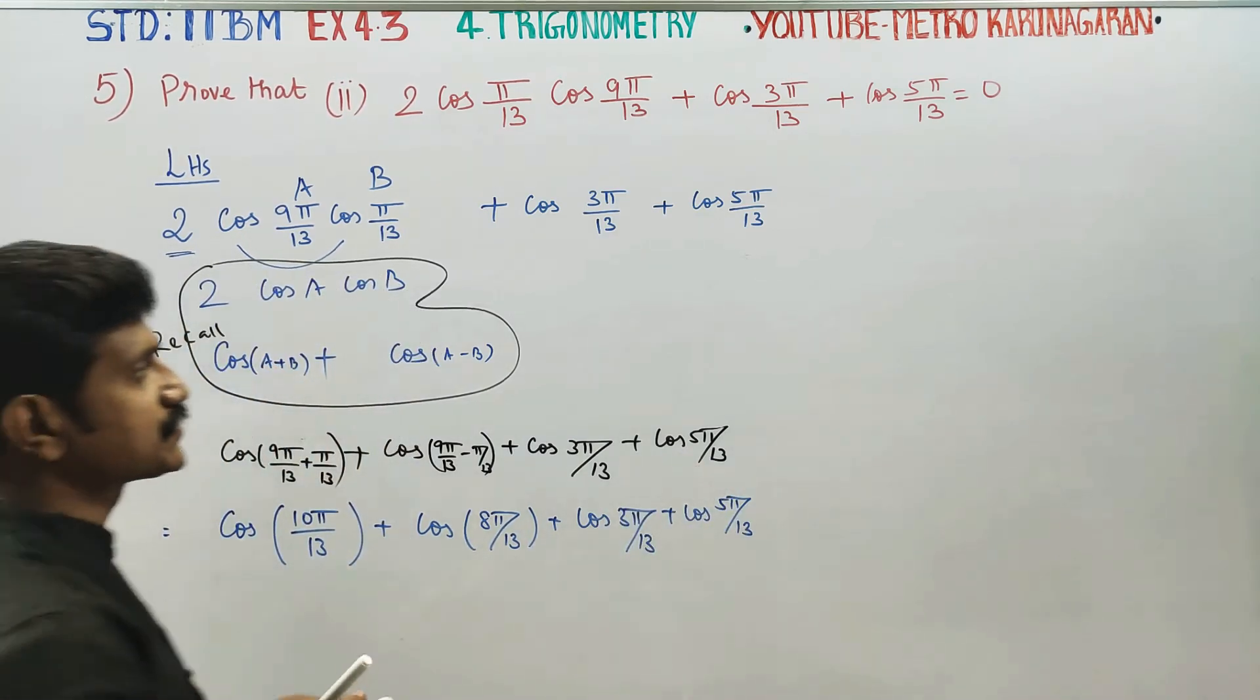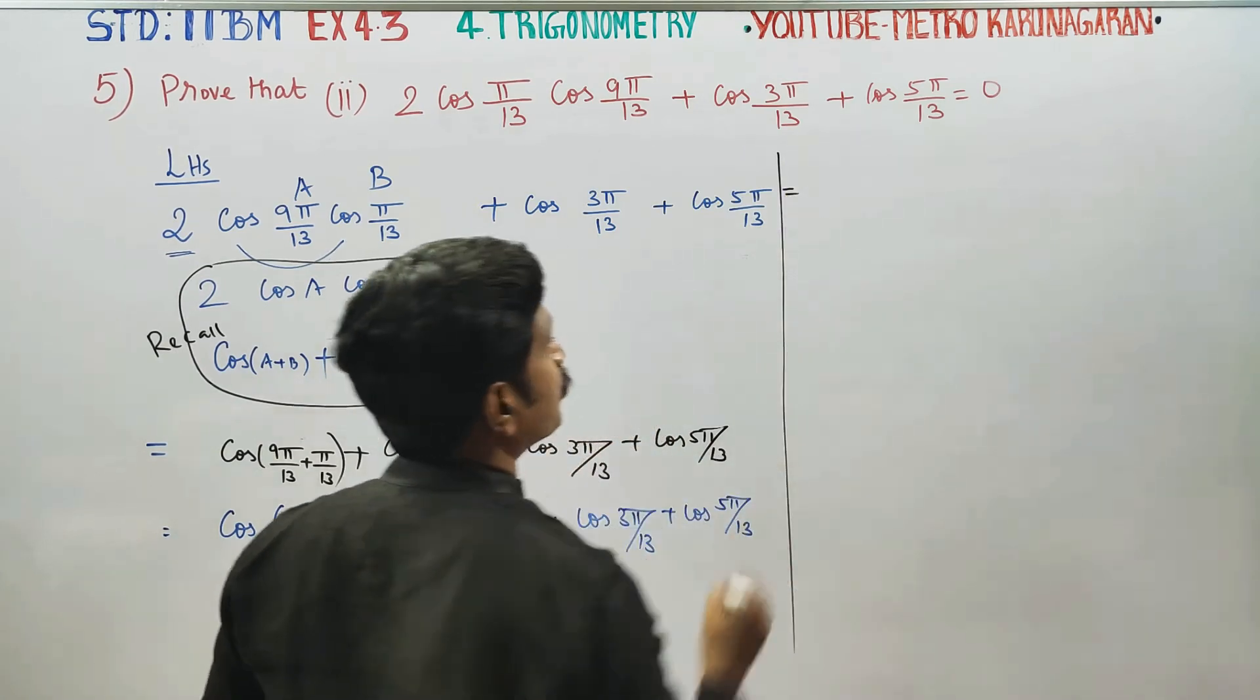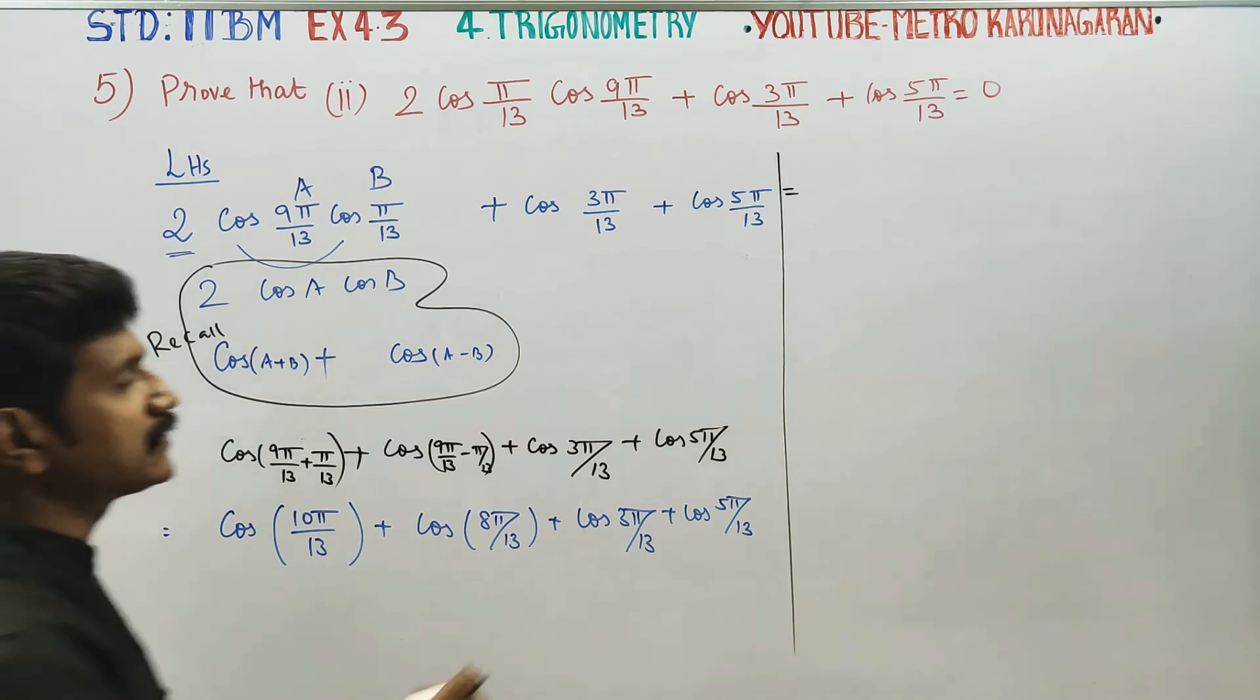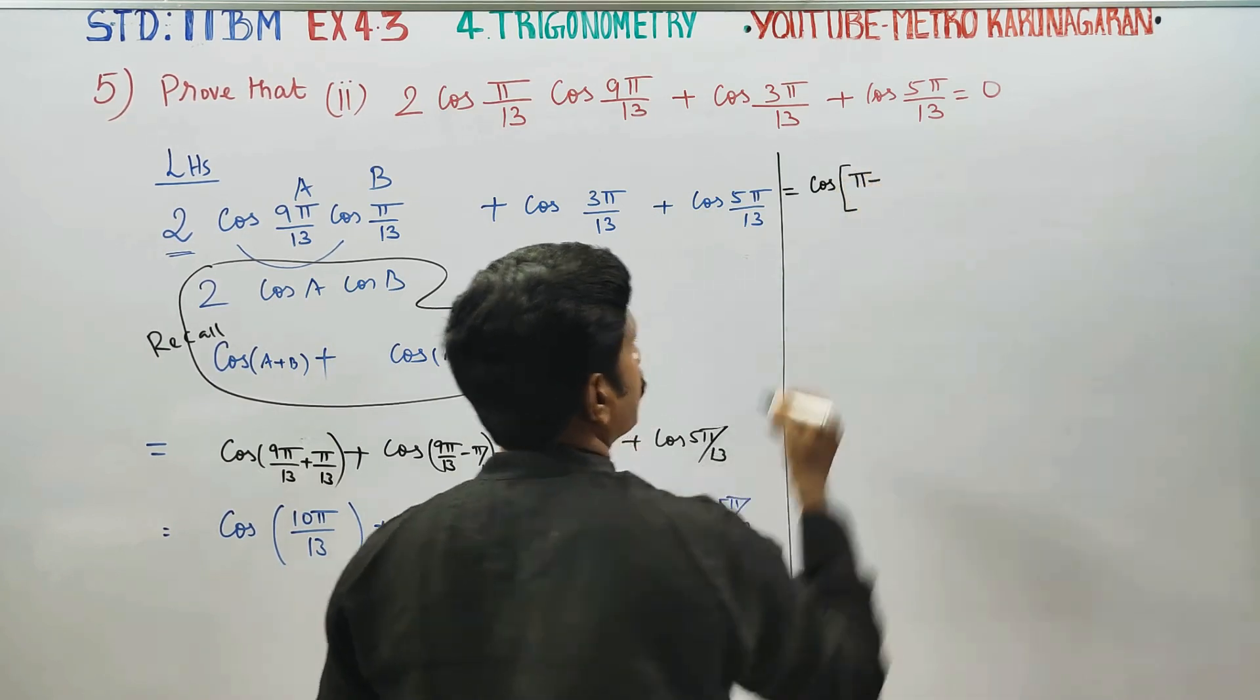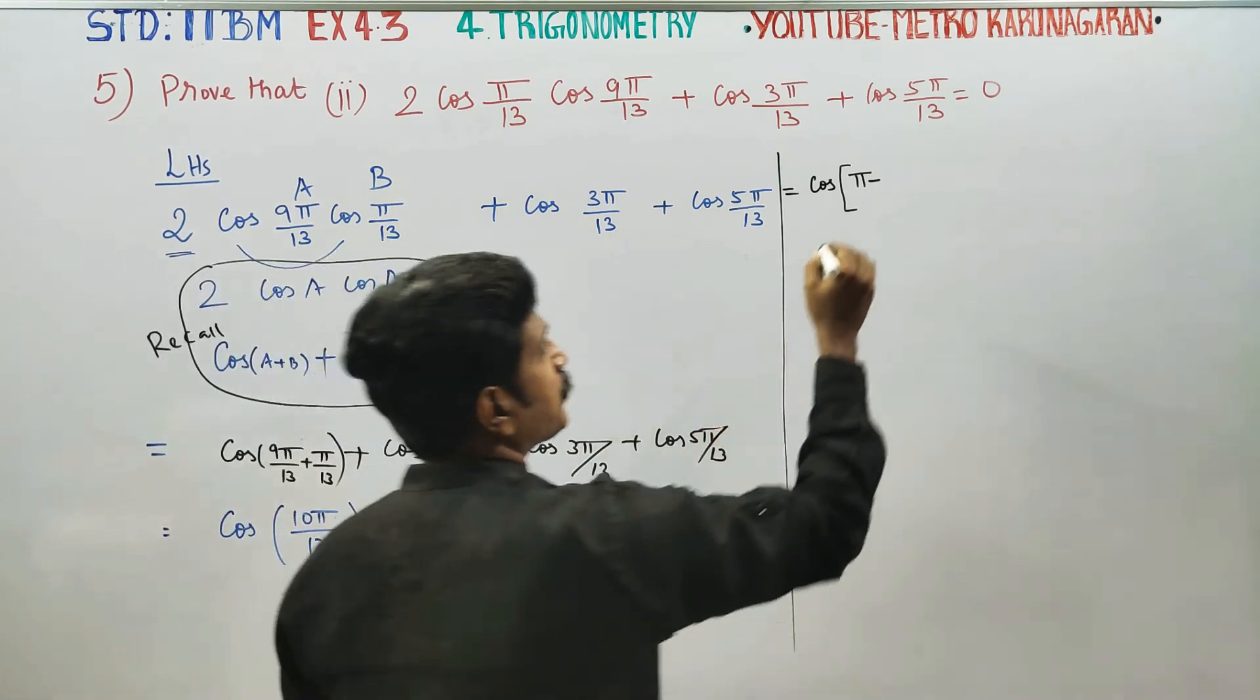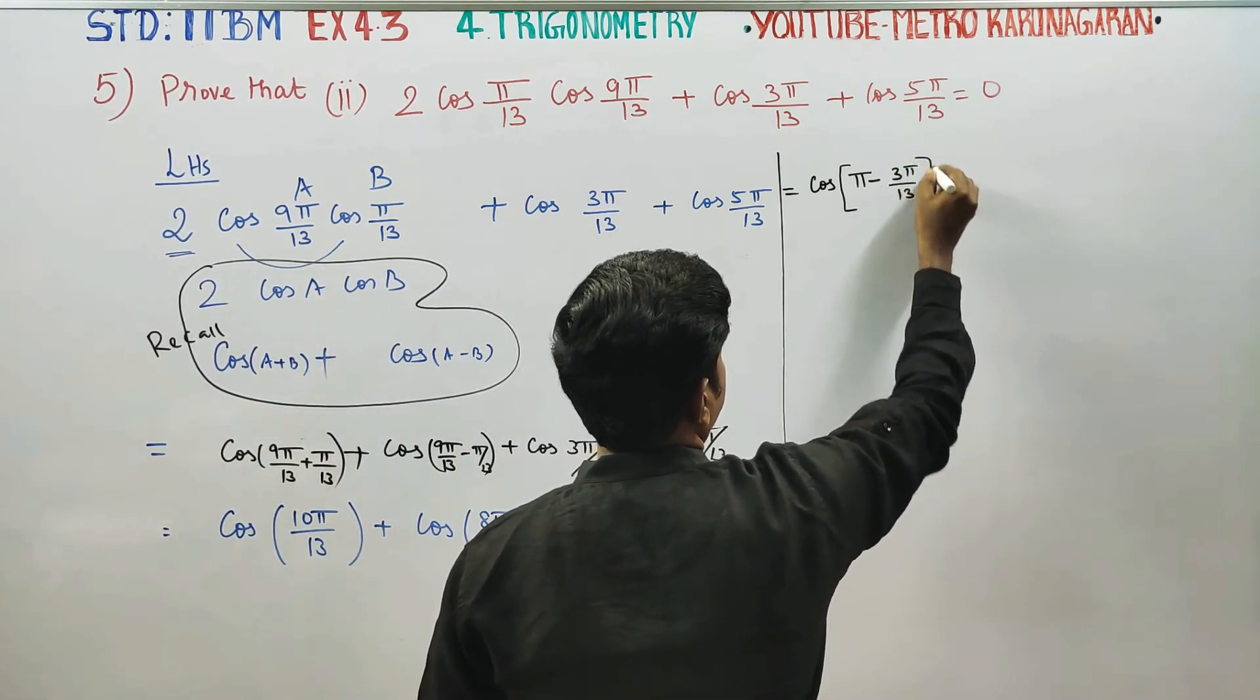At this stage, is equal to, this can be written as 10 pi by 13 can be written as cos pi minus, pi minus 3 pi by 13. How do you write?